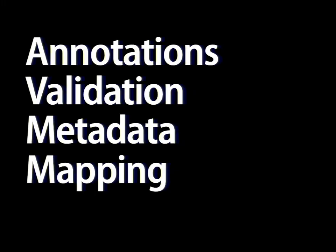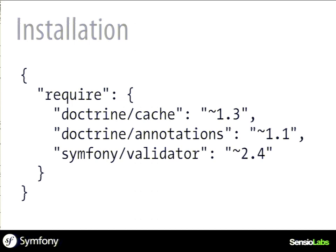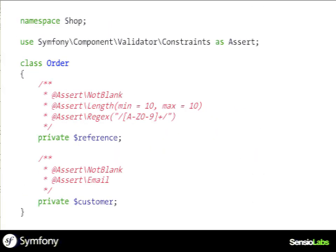Annotations are my favorite format. You need third-party dependencies — specifically the Doctrine annotation parser — to use annotations. For each property, you attach constraints using annotations, just tagging the rules. It is much more concise. The main drawback is that you mix PHP code with commented configuration, but otherwise the code is concise.